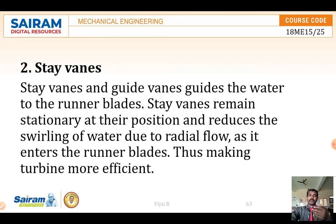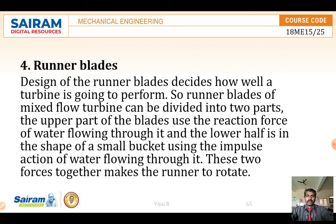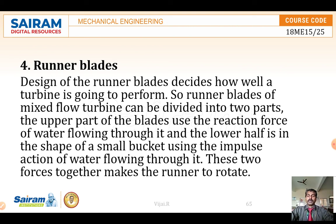This increases effectiveness and reduces the swirling of water due to the radial flow. Water coming in a radial direction would affect the blades, so the guide vanes properly guide the water to flow into the runner blades. When water enters the runner blades, the runner blades get energy — the potential energy and kinetic energy of the water coming from the dam. We know water has potential energy stored in the dam, which is converted into kinetic energy when passing through the nozzle or pipe before entering the turbine.